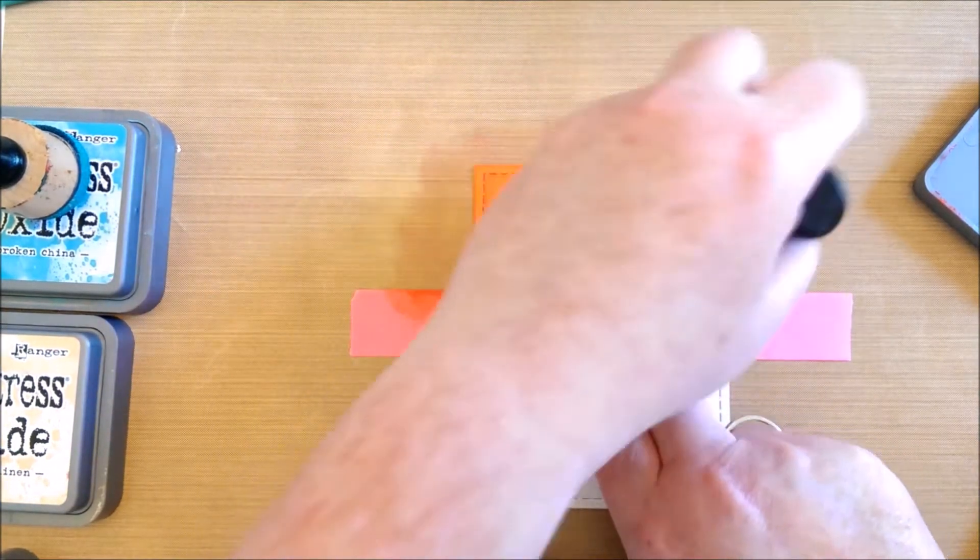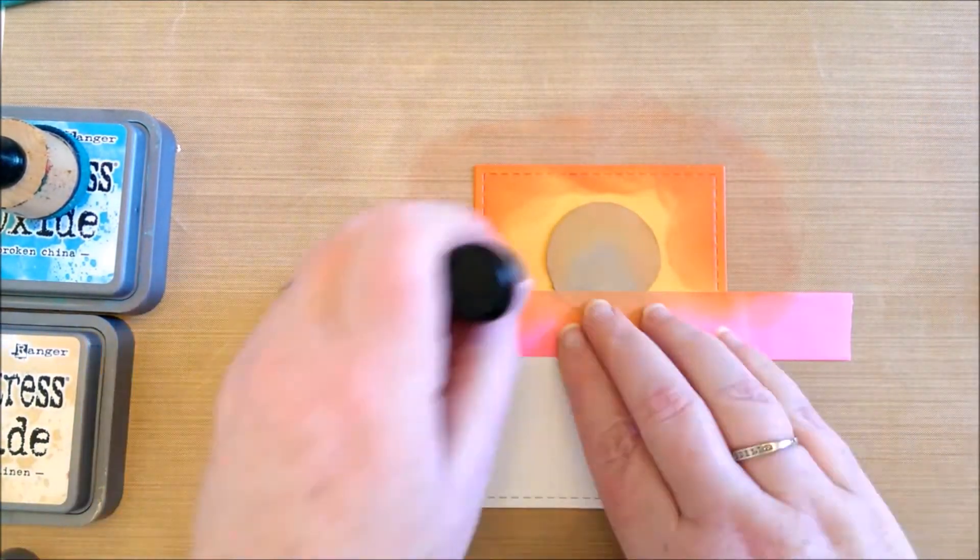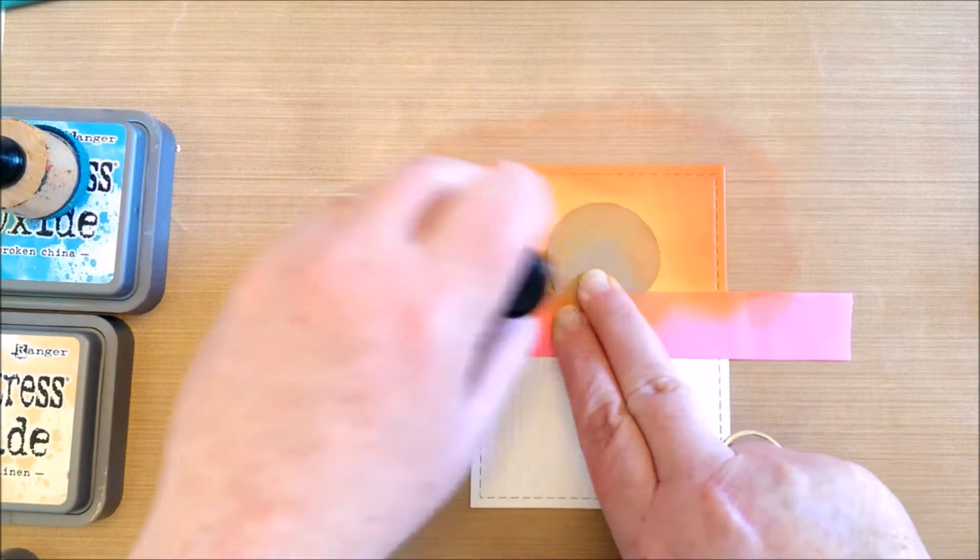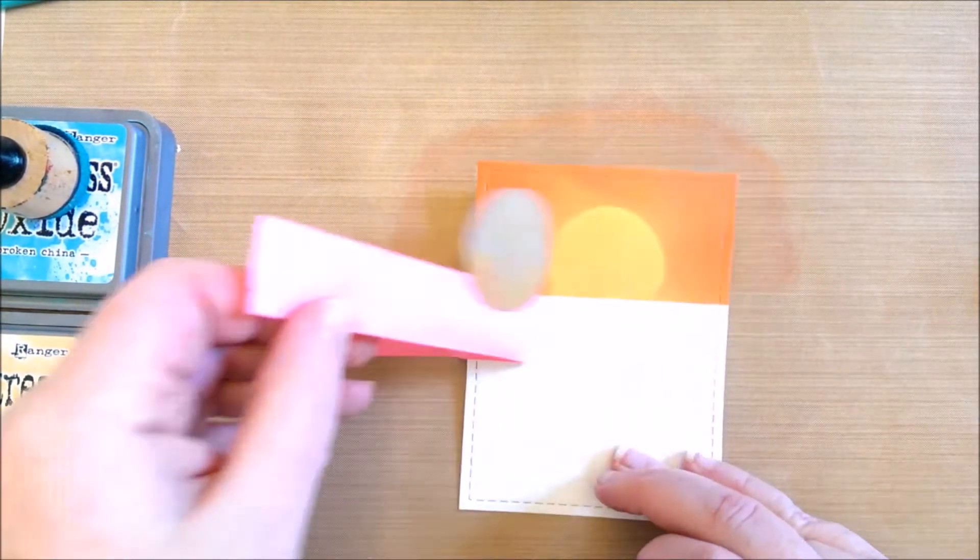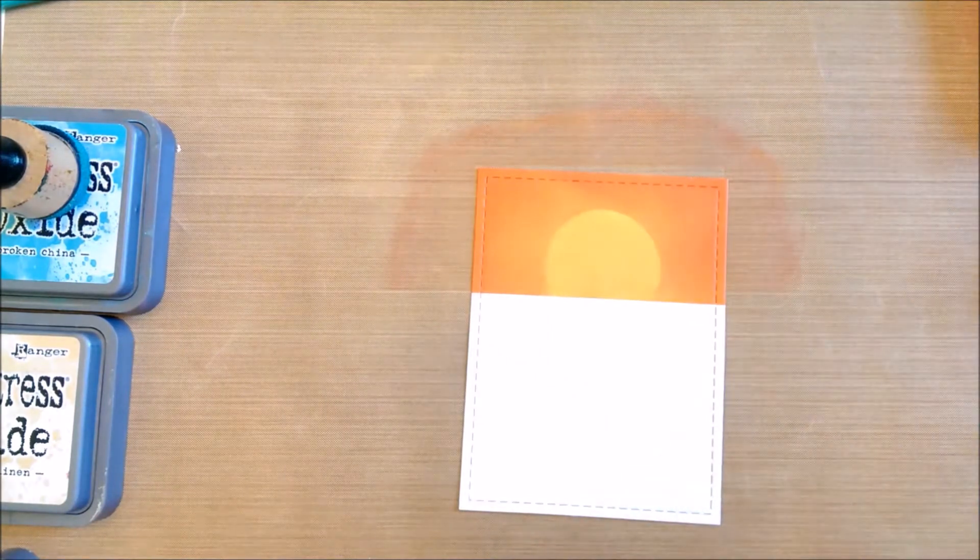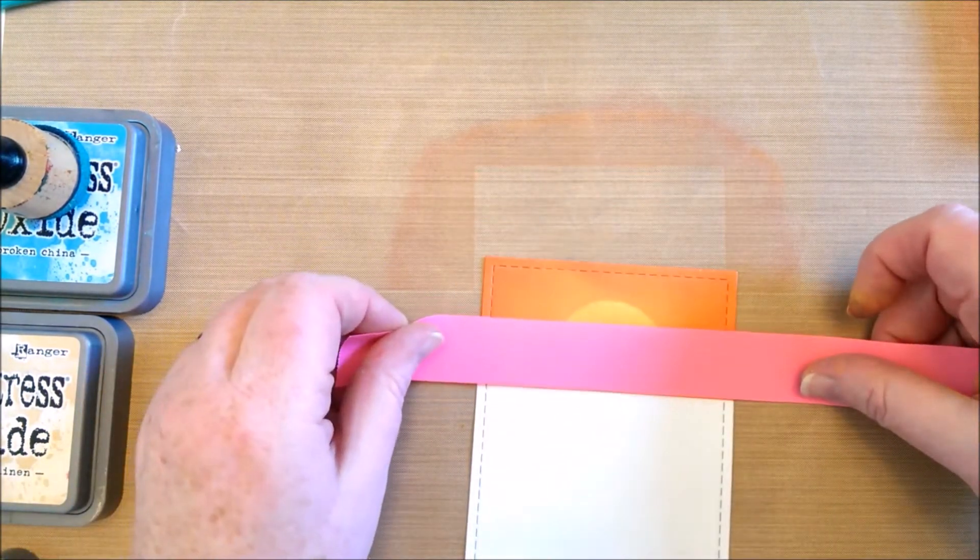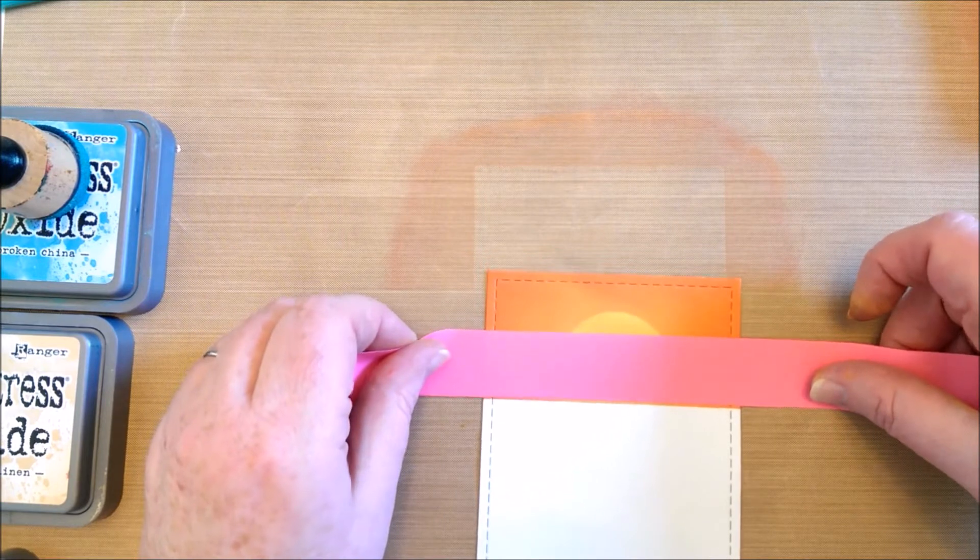Then I'm going in with candied apple around the edges of the card. Then I remove the tape and put some clean tape over the ink.